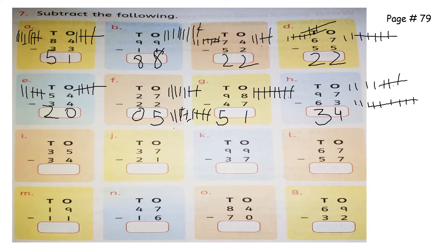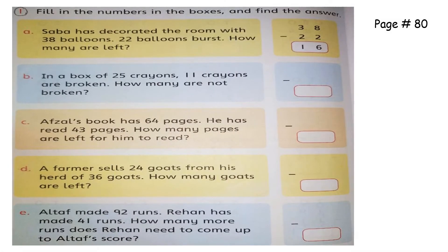One, two, three, four, five. The last two lines are your homework — you have to do those questions by yourself.